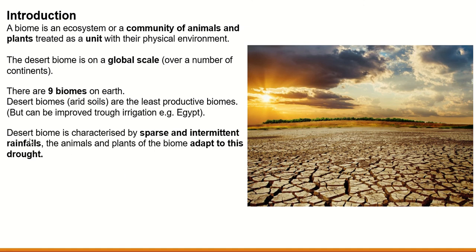The desert biome is characterized by sparse and intermittent rainfall. Sparse means there is not very much of it. So there is very little rain and it's intermittent — meaning it's impossible to predict when it will come. It can come randomly; it might not come for years. As we know, the animals and plants of the biome must adapt to this drought. If you want to survive in these conditions, you must adapt.